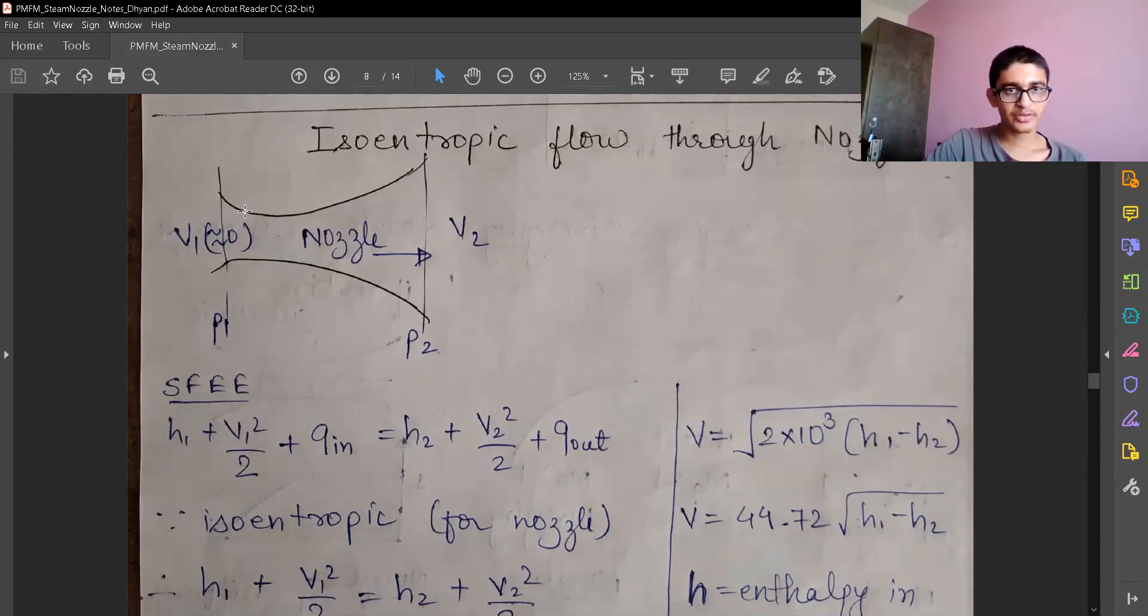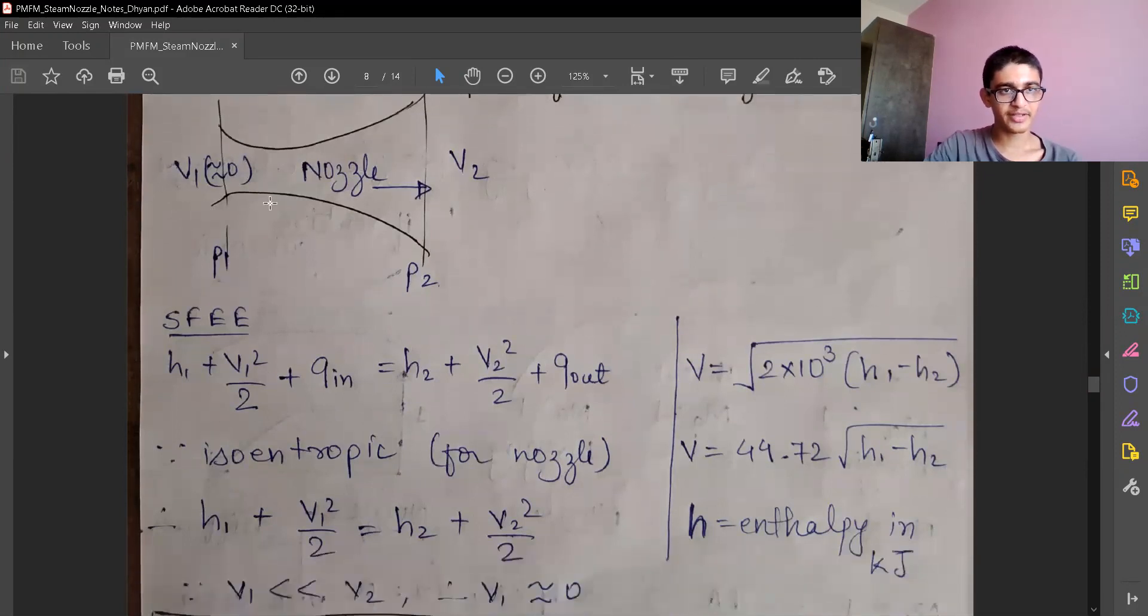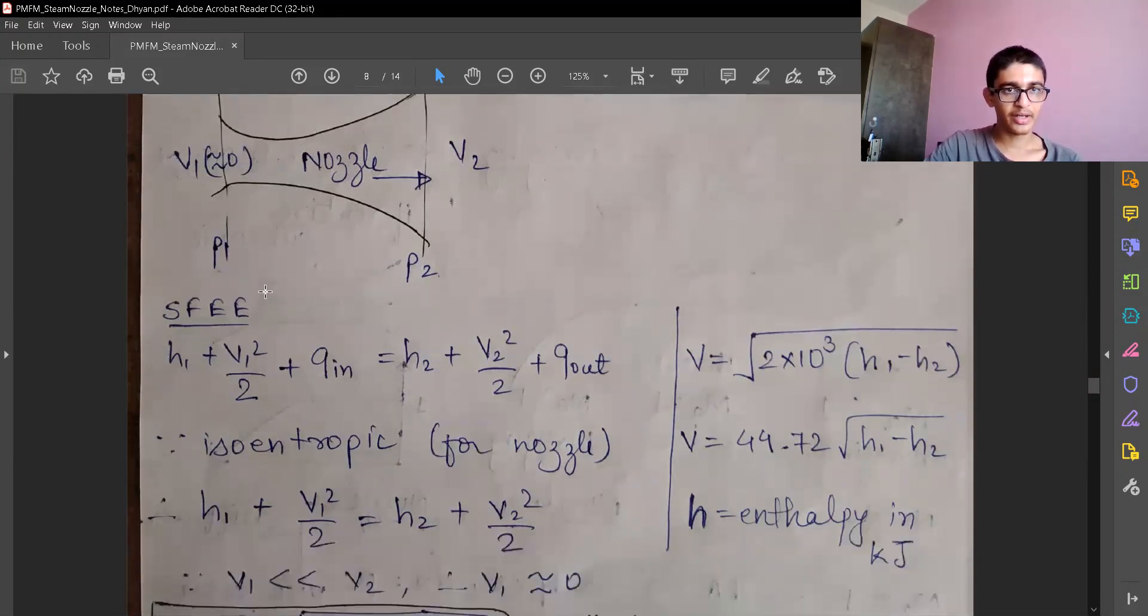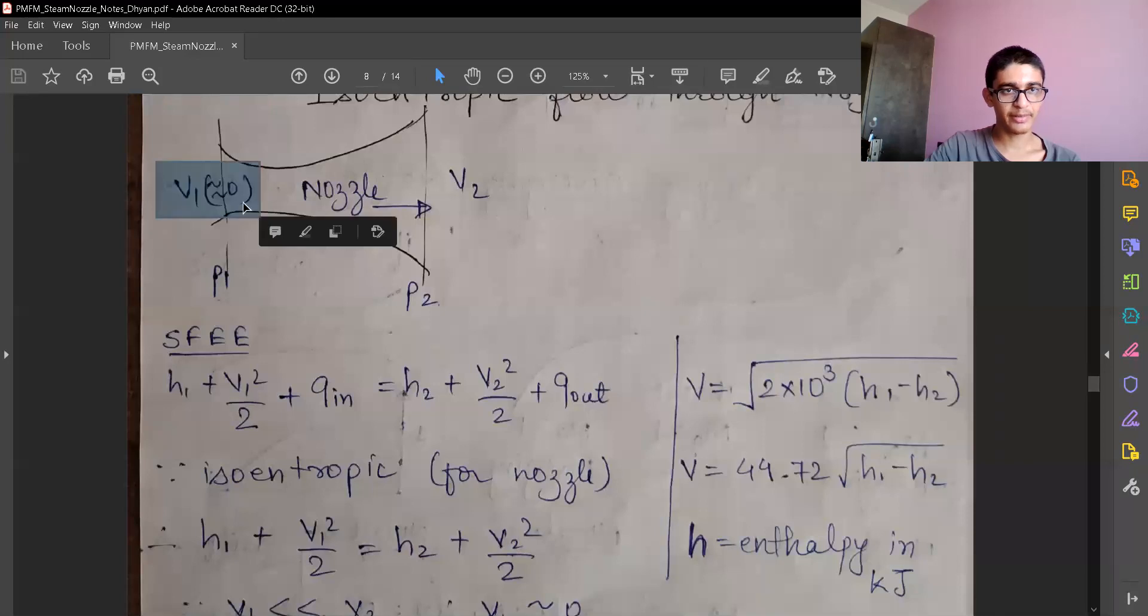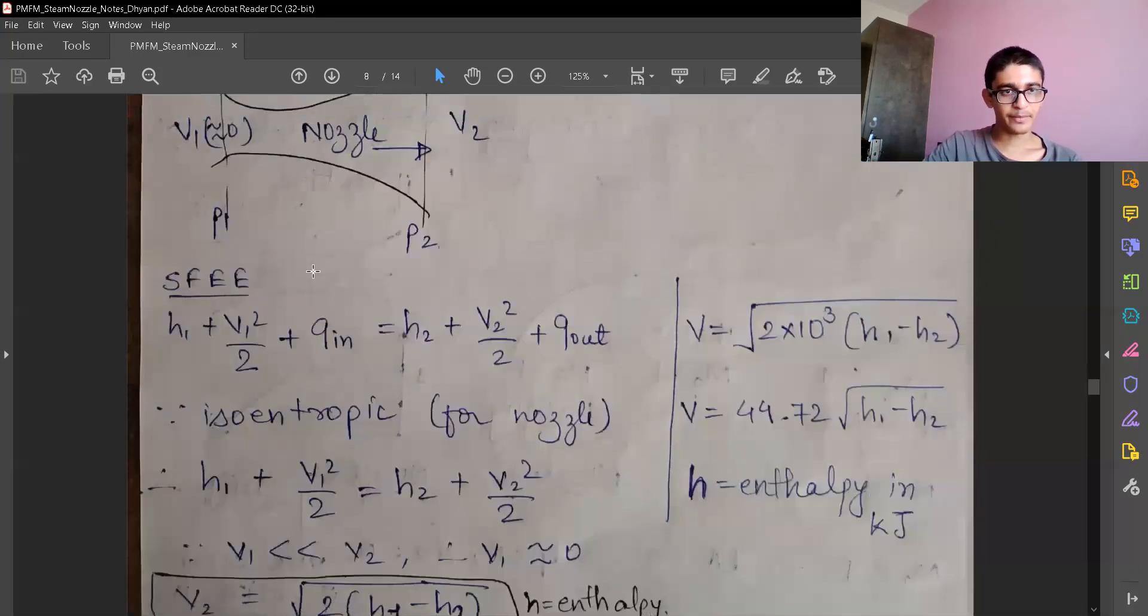So this is a common nozzle, we will look at the diverging type of nozzle. P1, P2, V1, V2 is the pressure and velocities, and we will assume that the inlet velocity is approximately equal to zero because the velocity at the outlet is very large—that's the purpose.